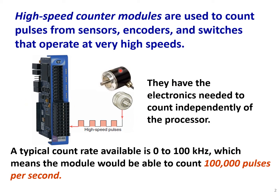Here we have our motor and the motor has a counter — usually a high-speed counter — which is basically a position sensor that sends the position of the motor to the PLC. These types of modules have the electronics needed to count independently of the processor, because you have a huge amount of input coming. A typical count rate available is 0 to 100 kilohertz, meaning the module can count 100,000 pulses per second. These are the pulses coming from encoders.